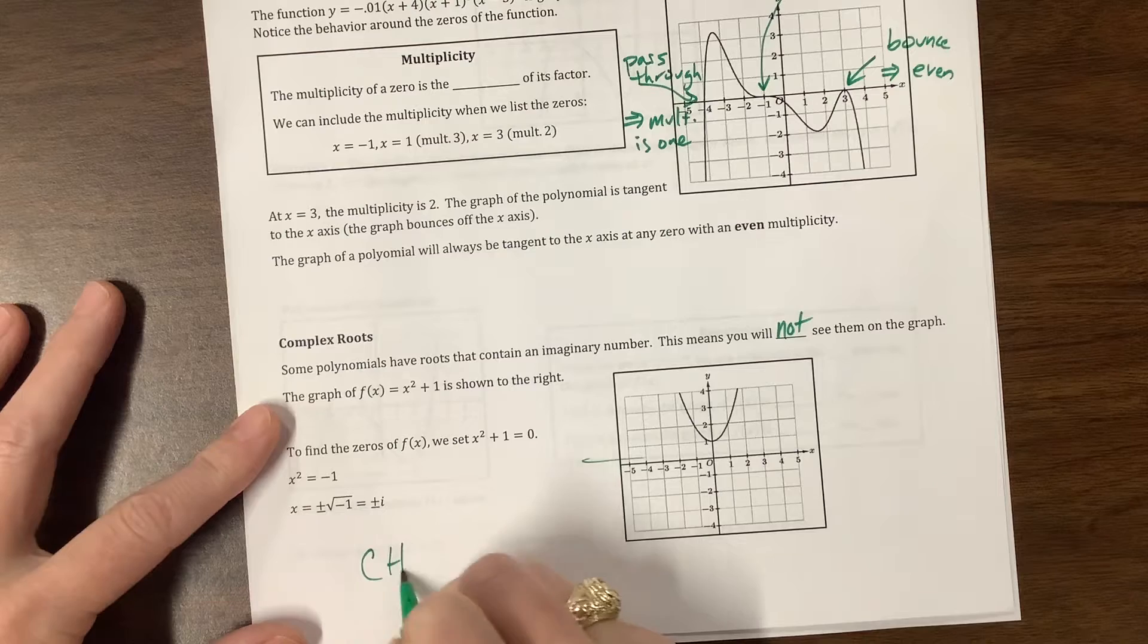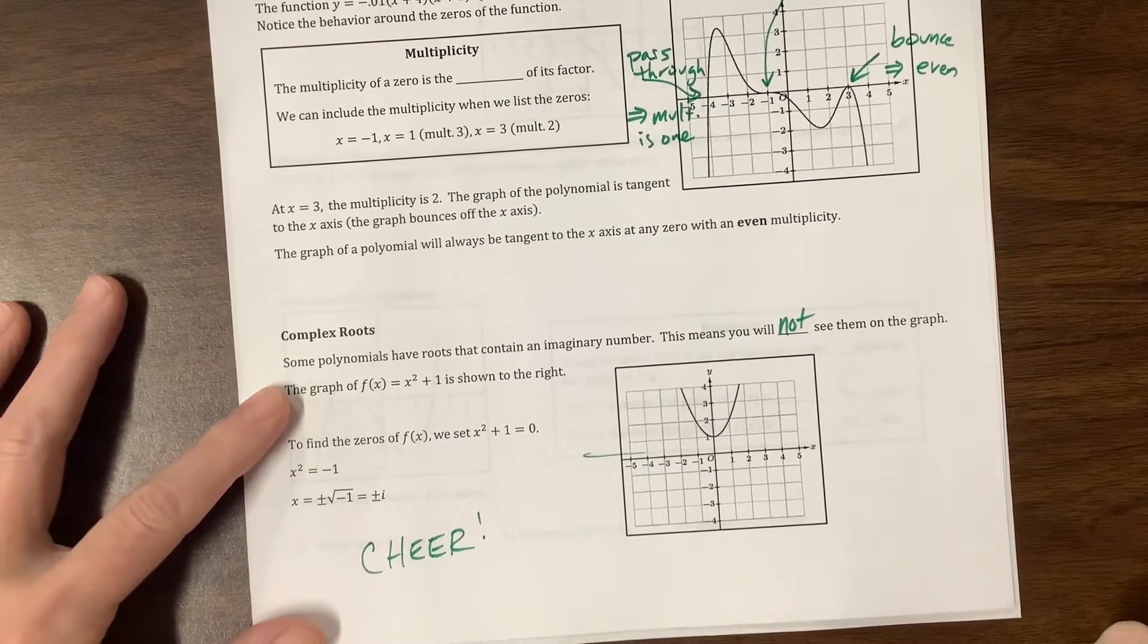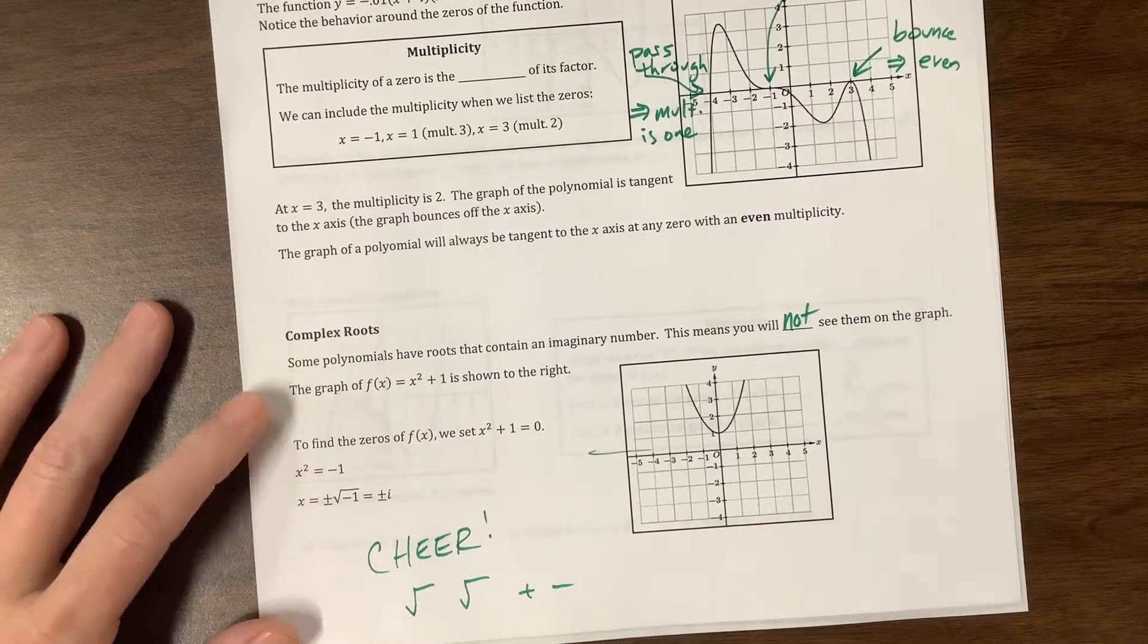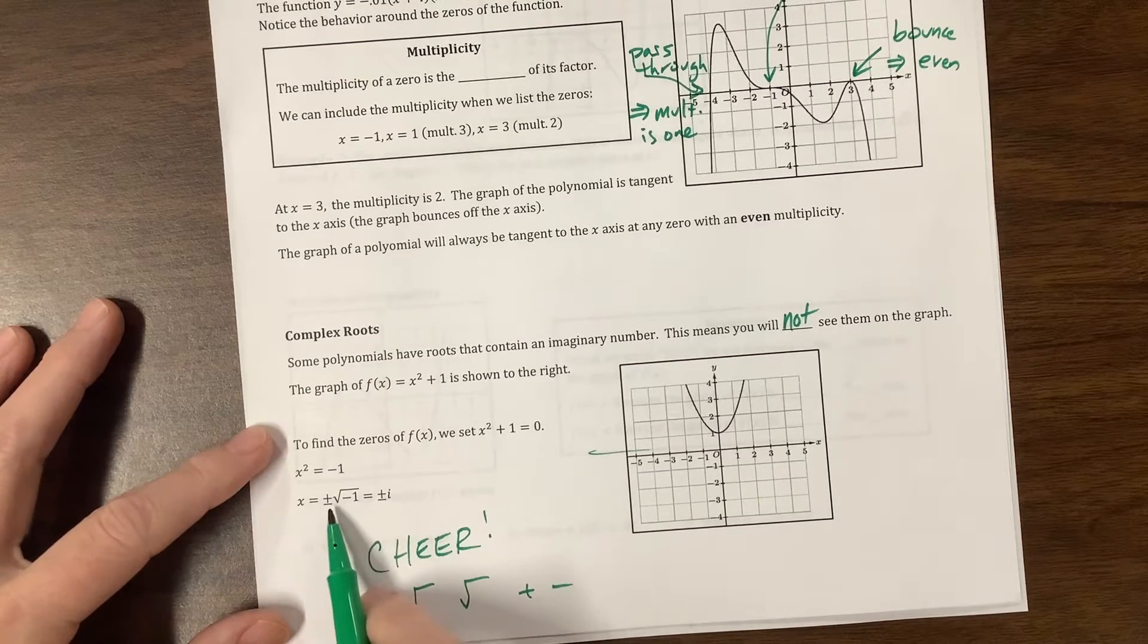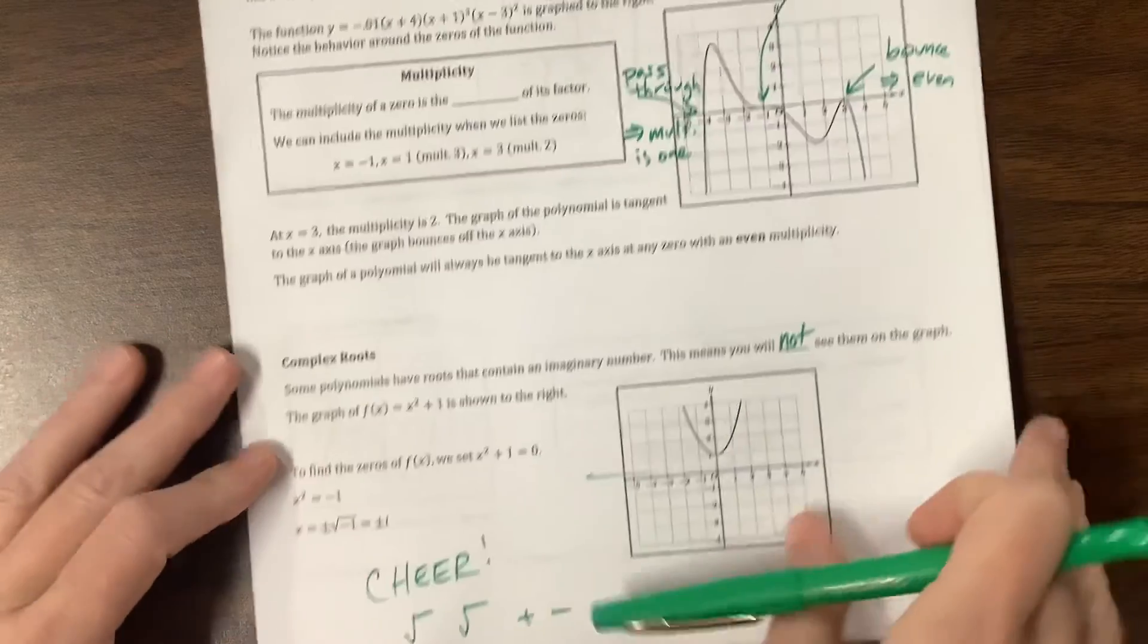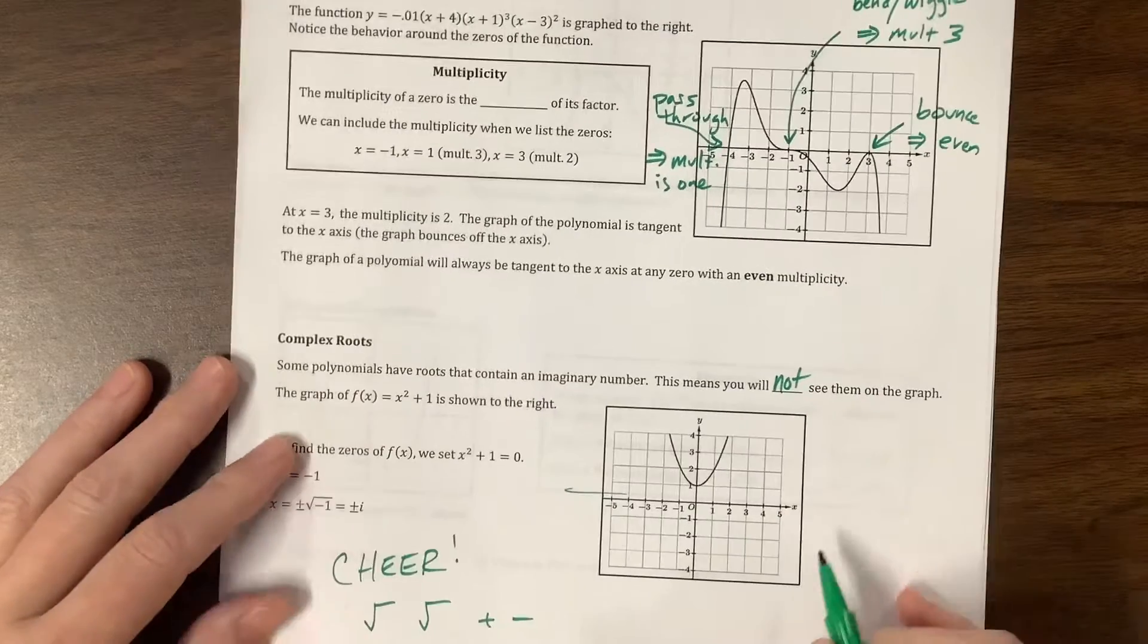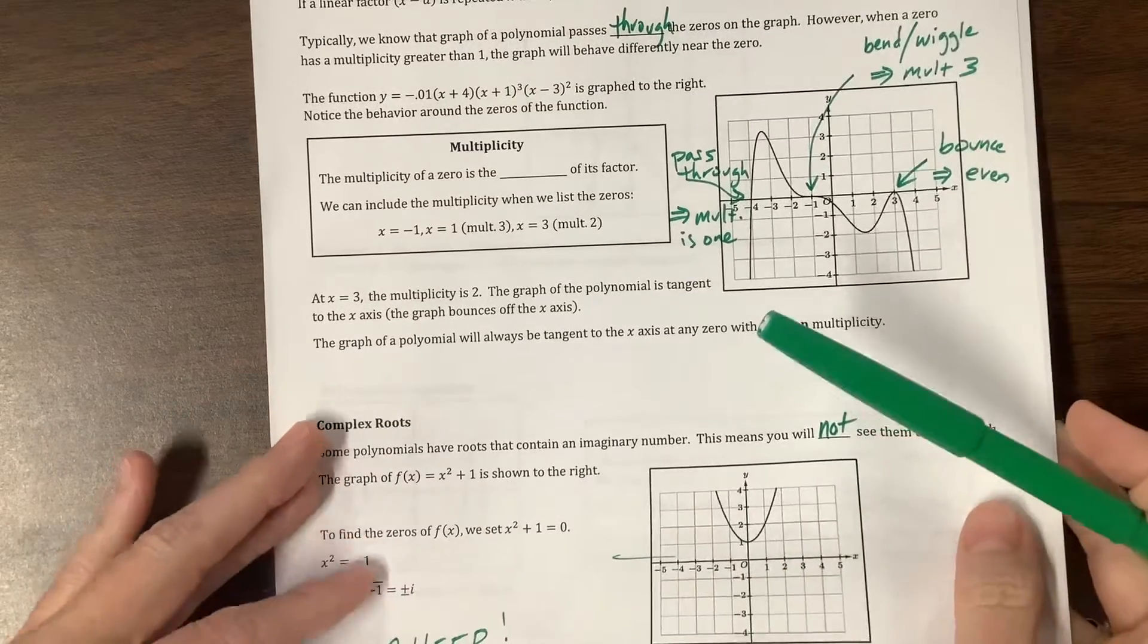We can set it equal to 0 and subtract 1. And now we can do, this is where I do my cheer. I have a video where I was on Zoom with some former students demonstrating the cheer, and it's square root, square root, plus, minus. That's what happened here. We have plus or minus, and the square root of negative 1 is equal to i. Notice we can't see that there's a plus or minus i on here, because my x-axis is all real values, and my y-axis is all real values. We don't know where to plot a non-real value.